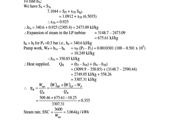The thermal efficiency is work net divided by heat supplied. W_net = W_HP + W_LP minus W_pump = 509.46 + 675.61 minus 10.25 = 1174.82 kJ/kg. Efficiency = 1174.82 divided by 3307.31 = 0.355, which is 35.5%. The steam rate SSC = 3600 divided by W_net = 3.064 kg per kilowatt-hour.